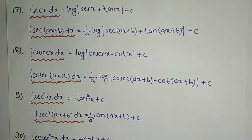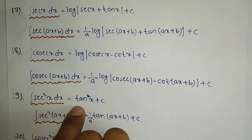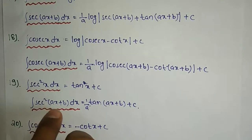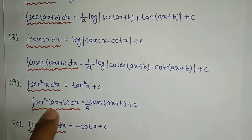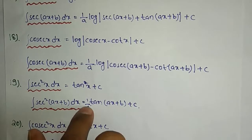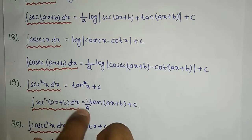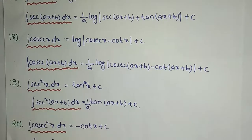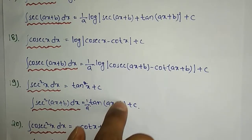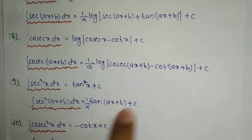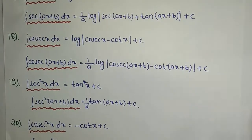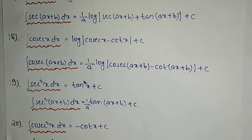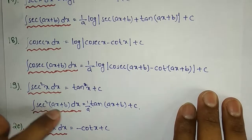The 19th formula: integration of sec²x dx equals tanx plus C. For sec²(ax+b) dx, we apply the same inner derivation rule: the result is 1/a · tan(ax+b) plus C.